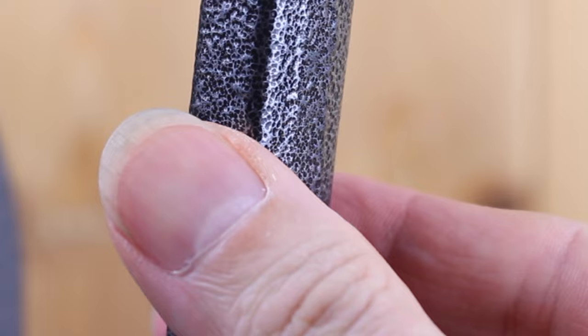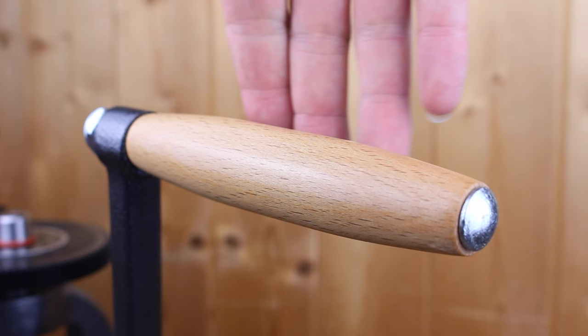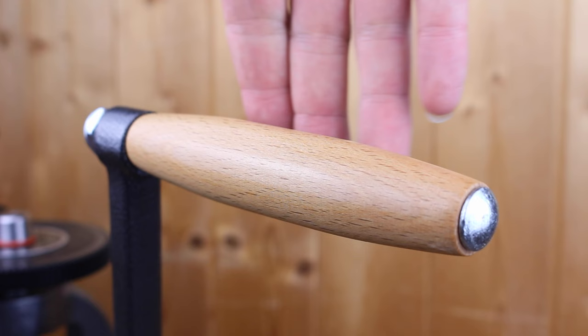The handle has been forged not cast. This makes it incredibly strong and as a finishing touch here you can see the grip. Now Pepe could have just used a plastic handle but no.